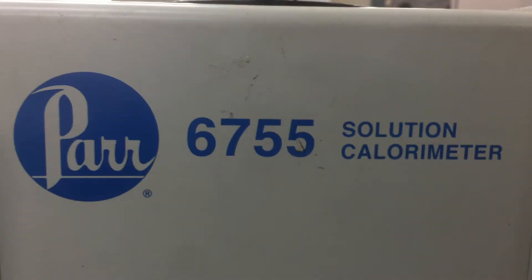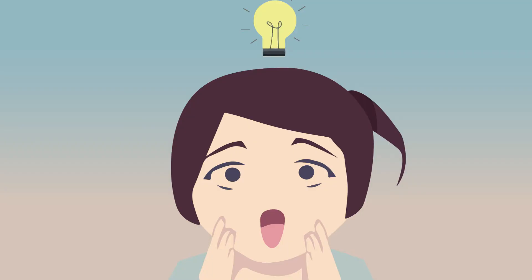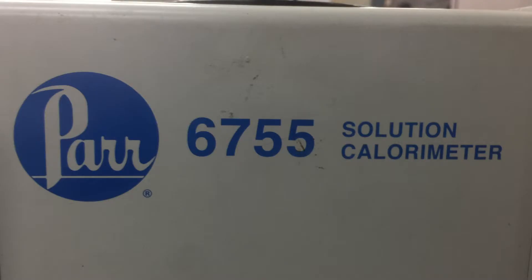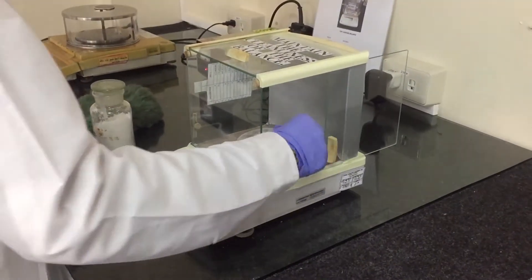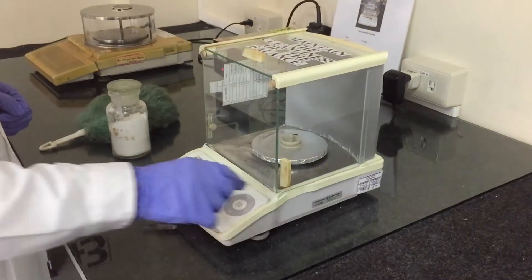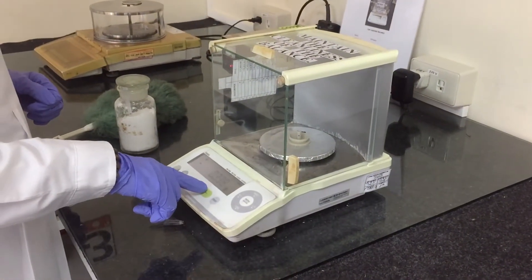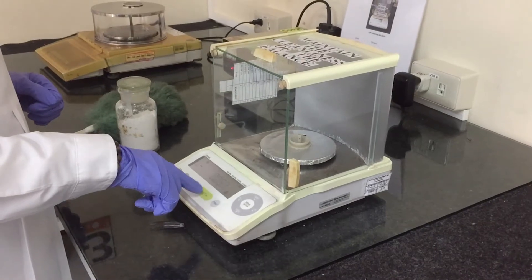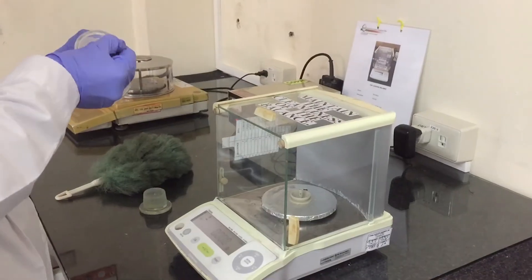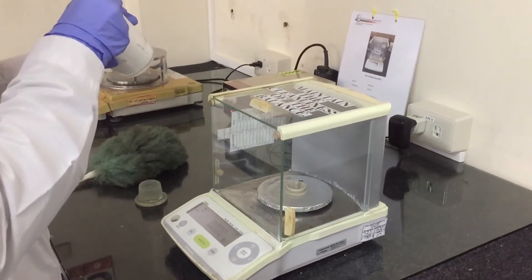The PAR6755 solution calorimeter was switched on. Before starting, we then waited for the equipment to be fully functional. The weight of the ammonium chloride was then measured, starting from 0.1 grams with an increment of 0.1 grams until there were 10 trials gathered.